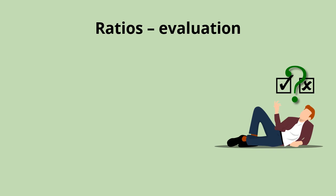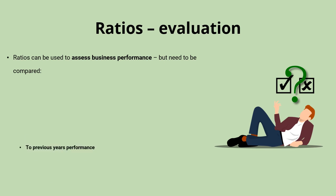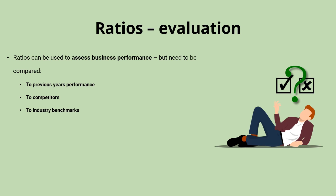All of these ratios can be really useful in assessing business performance, but because there's not necessarily a clear figure for each one representing a good or bad ratio, we really need a point of comparison. We might compare to previous years' performance — as we've been doing throughout this video, looking at 2019 vs 2020. We can also compare to a close competitor, or look at industry benchmarks, since different industries will have different figures representing good profitability, liquidity, or gearing ratios.